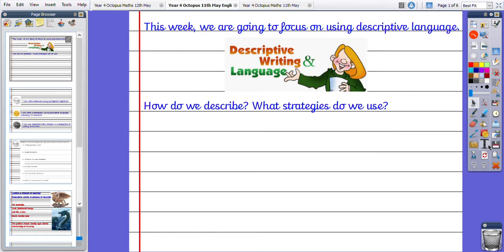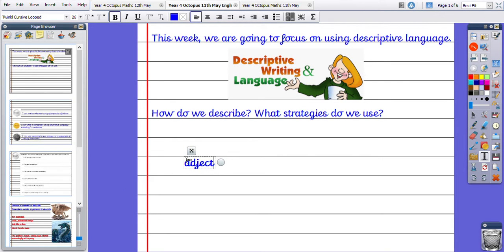So we know that we could use adjectives to describe, we could use adverbs, we could also use verbs to describe and even nouns or pronouns. So there's any type of word type that helps us to describe, for example prepositions.